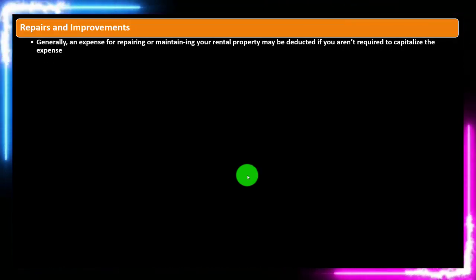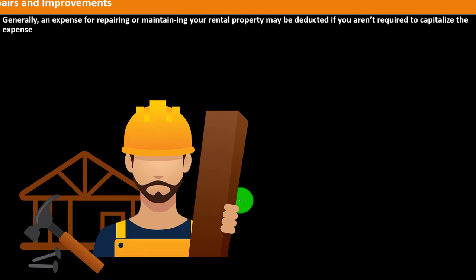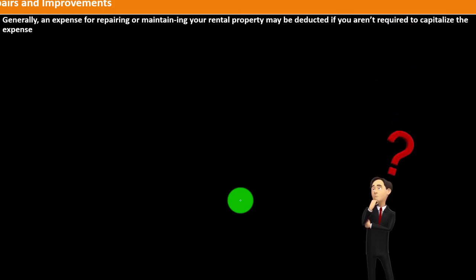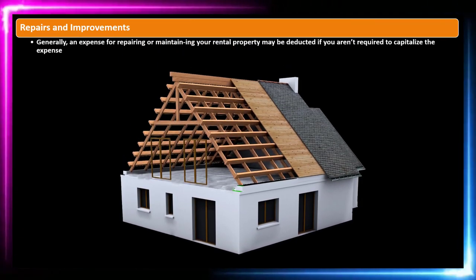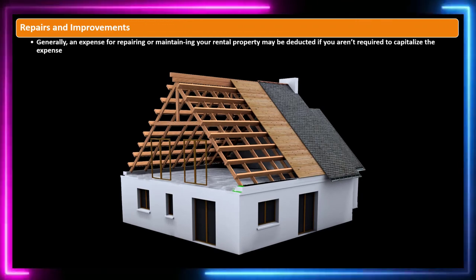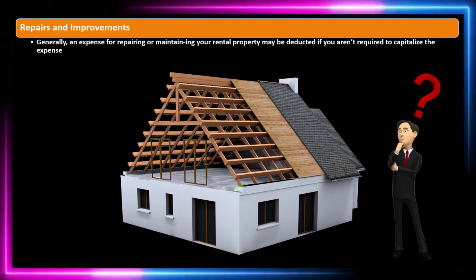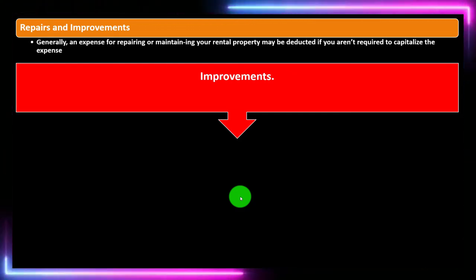Repairs and improvements: generally, an expense for repairing or maintaining your rental property may be deducted if you aren't required to capitalize the expense. The key question is whether something is a repair — deductible this year — or an improvement, which must be capitalized and deducted over multiple years, unless you can get an accelerated deduction like a Section 179 deduction. You usually want to categorize costs as repairs to get the benefit upfront. For example, repairing a hole in your roof is a repair, but putting on a whole new roof sounds like an improvement — and there are sticky mid-areas where you'd want to categorize as a repair if possible.